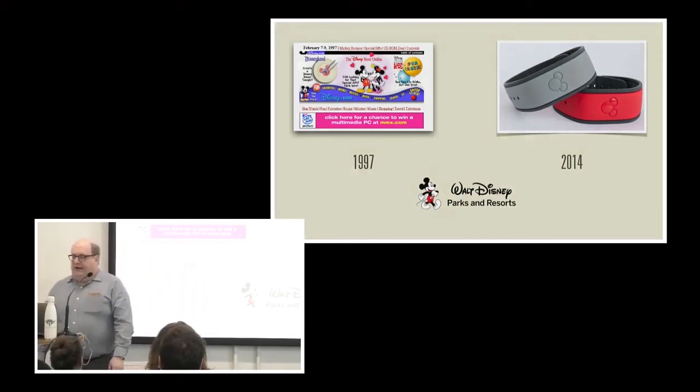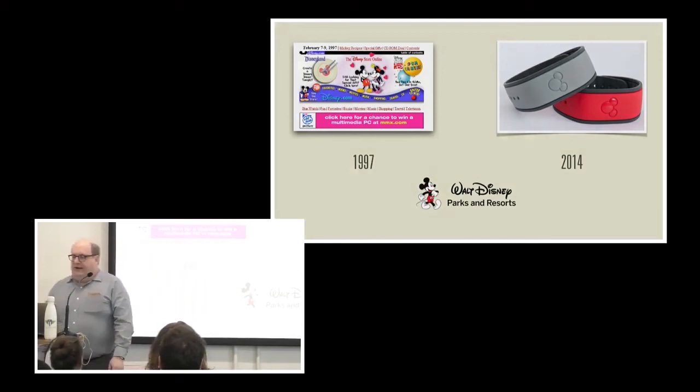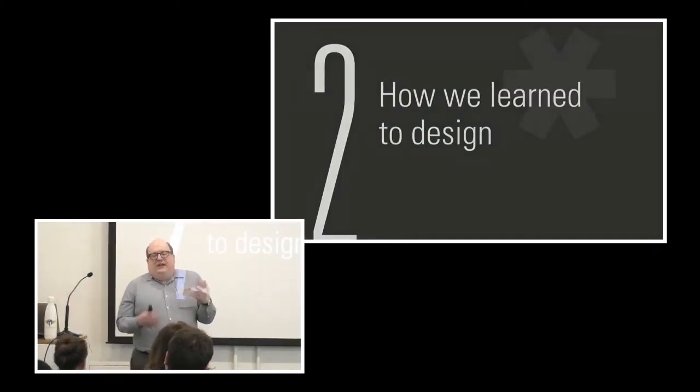If we go back to 1997, this is where we're at. Yet here in 2014, they come out with probably the most aggressive, most interesting user experience effort we've ever seen. How did they get from that website to the magic band? That's the question that I want to answer. To answer that, we first have to look at how people learn to do things they don't know how to do. It was clear that Disney did not understand how to do this. To do that, we have to dip our toes in some theory.